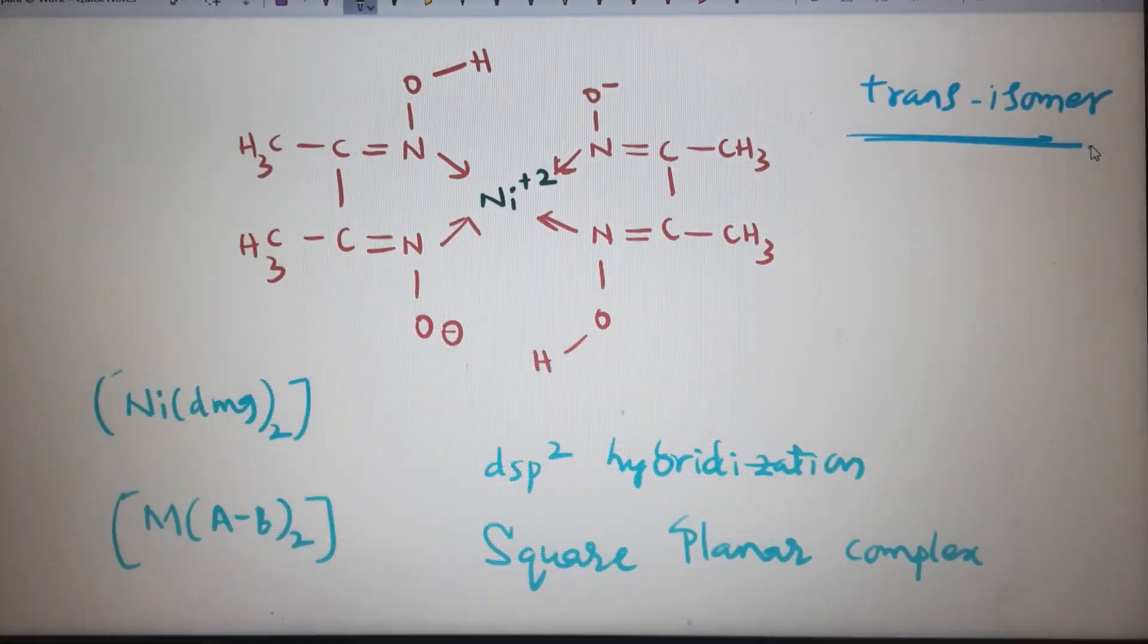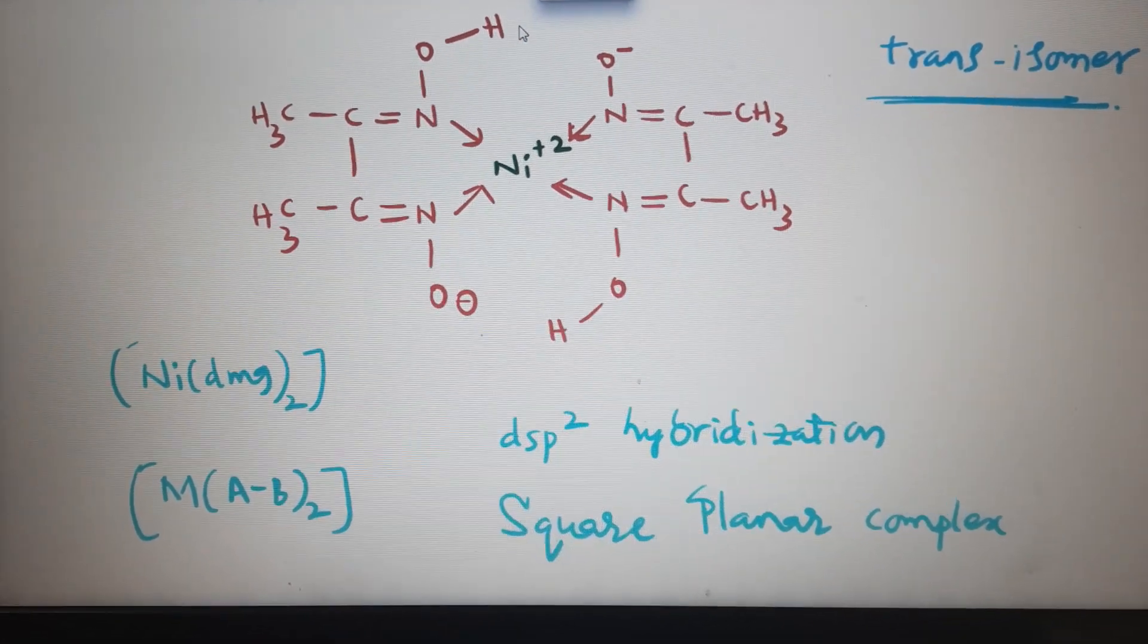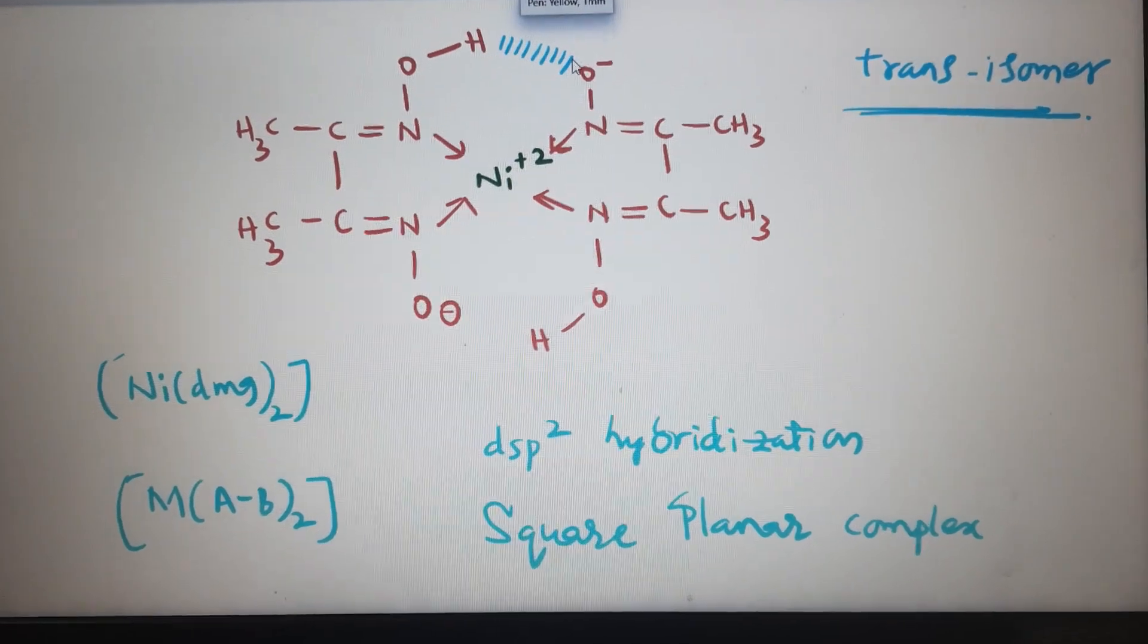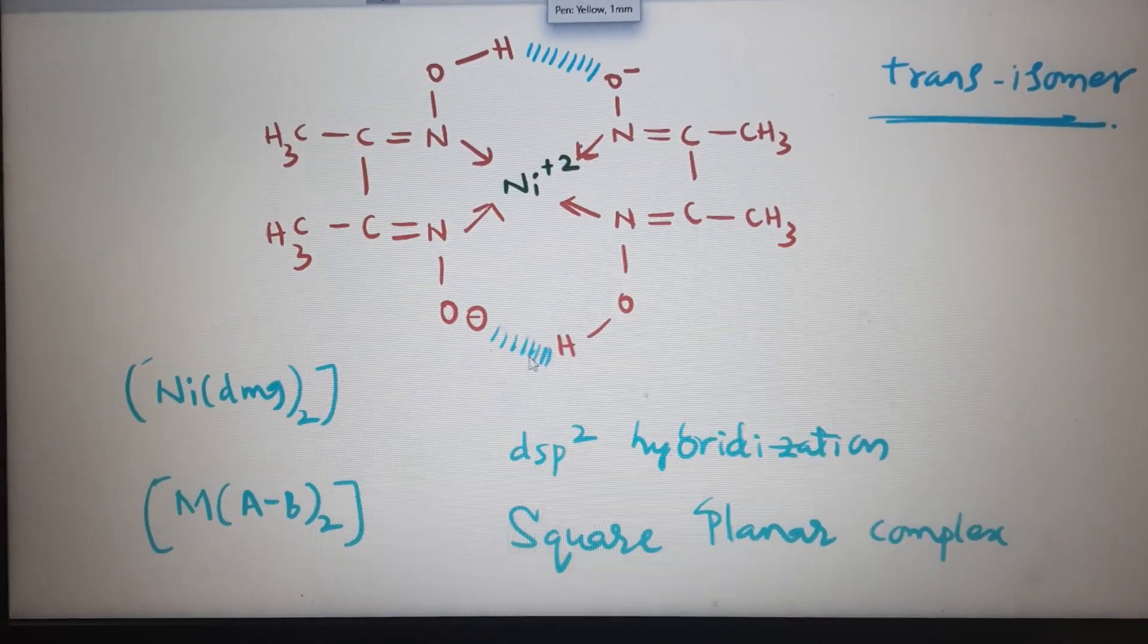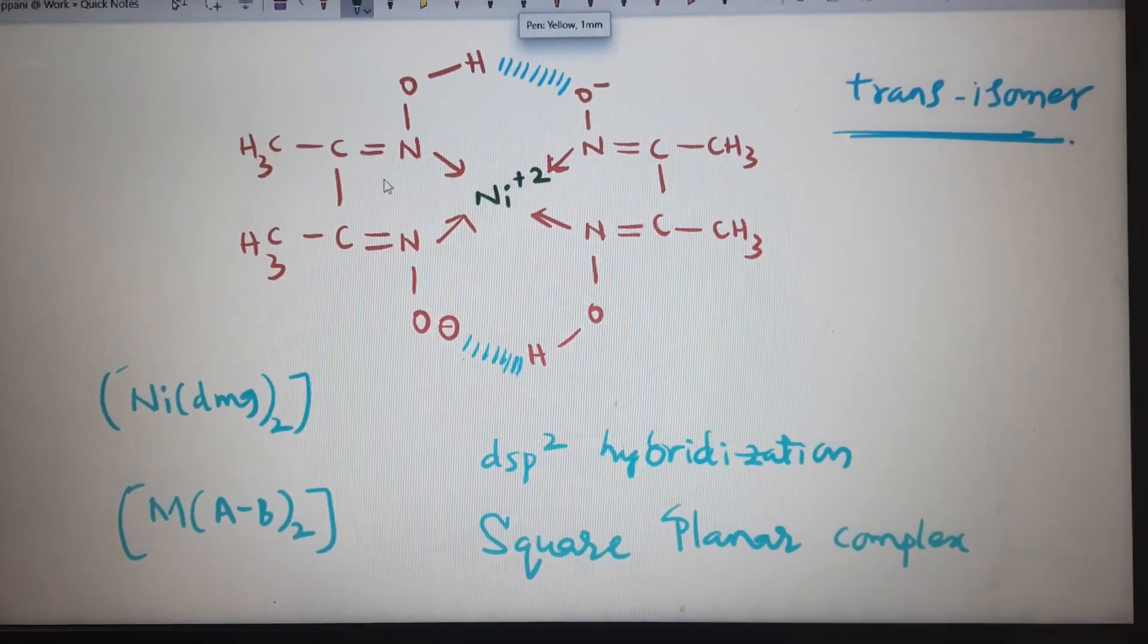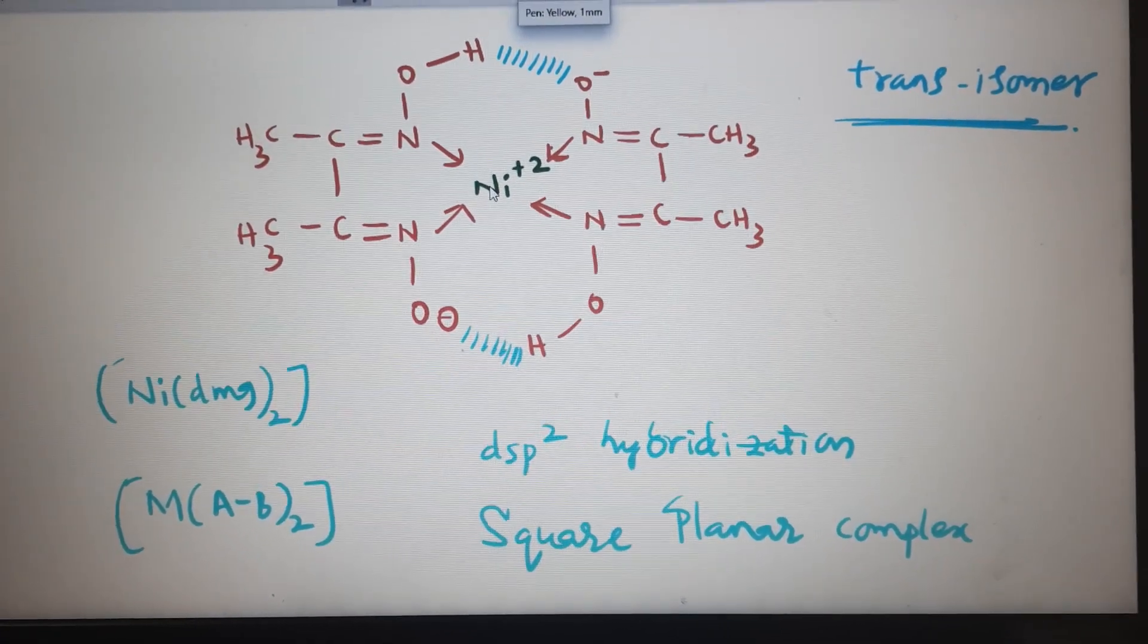And another important thing here: there are H-bondings in this way and in this way. So there are two five-membered rings and two six-membered rings.